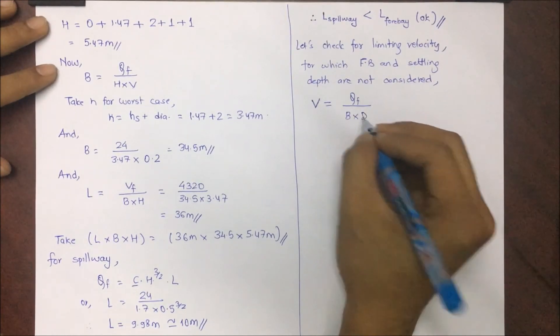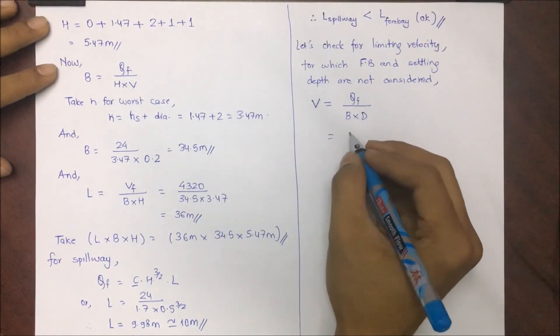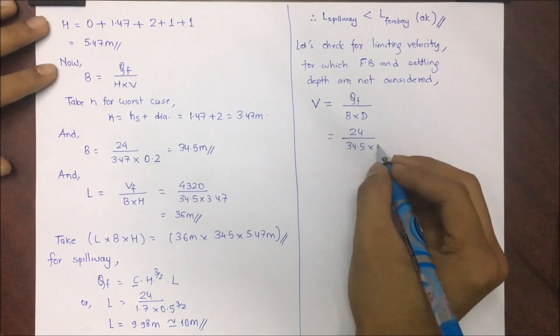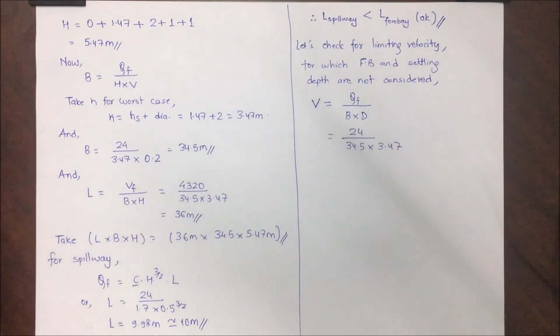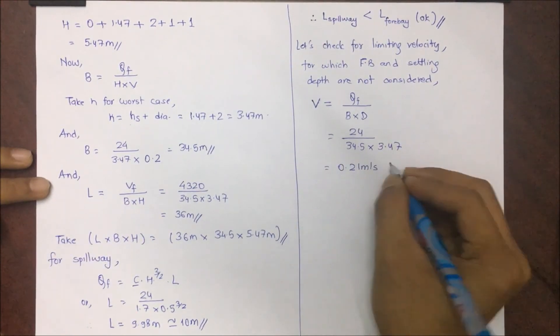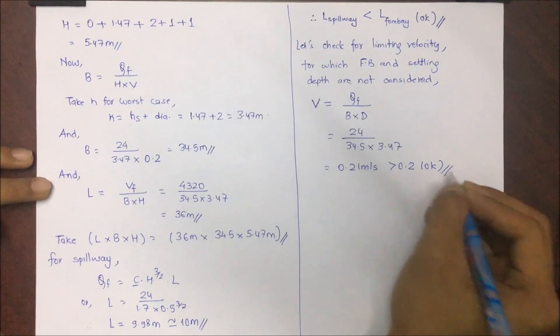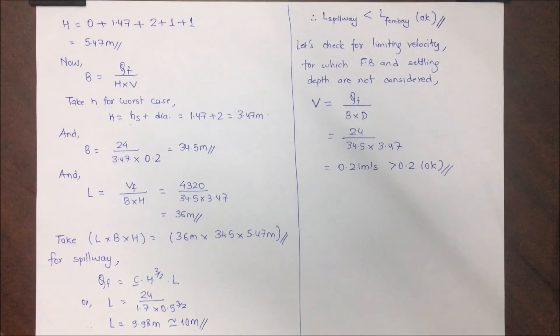Let's check, for which the freeboard and minimum settling height is neglected. Limiting velocity V is computed by Qf divided by B into d, that is 34.5 into 3.47. This comes as 0.21 meter per second, which is greater than 0.2 and lies in the range, so this is okay.